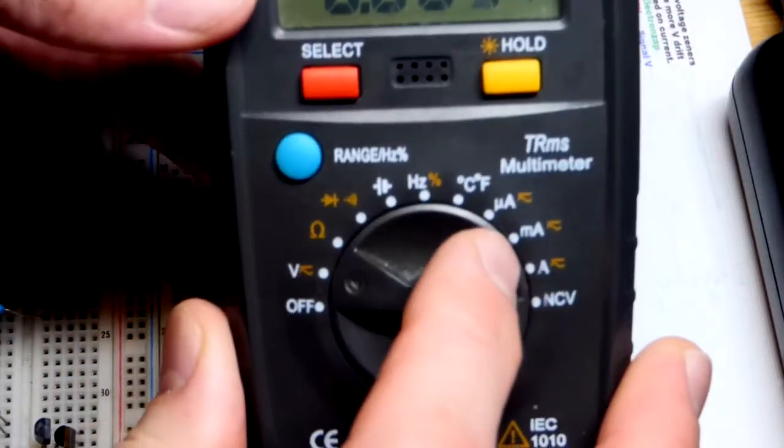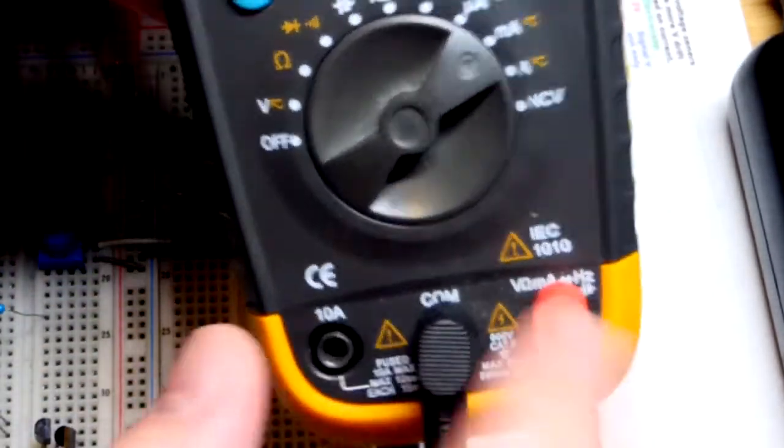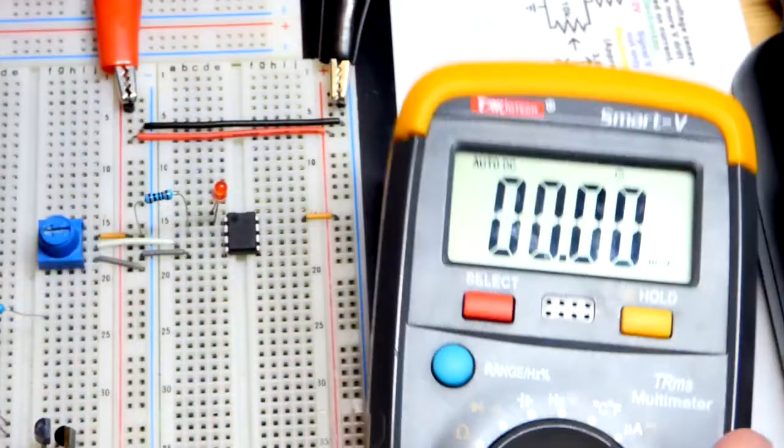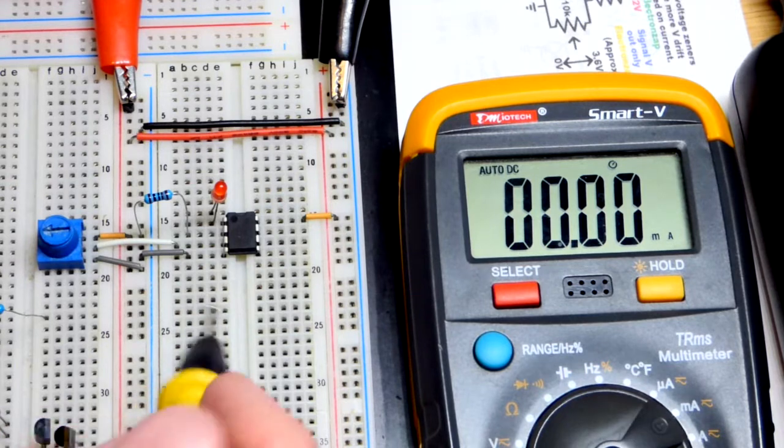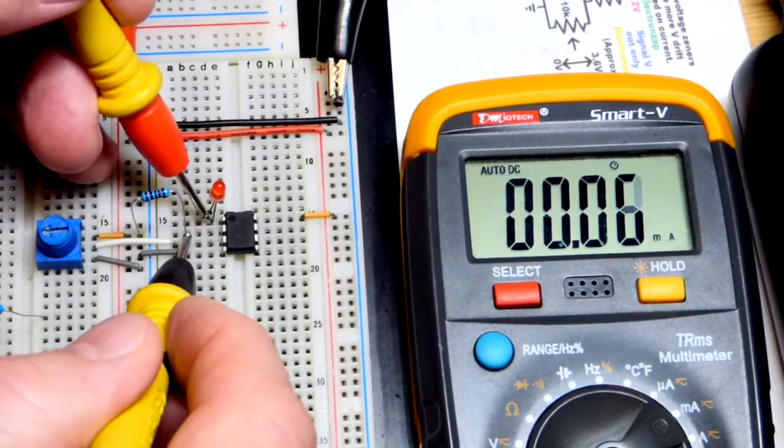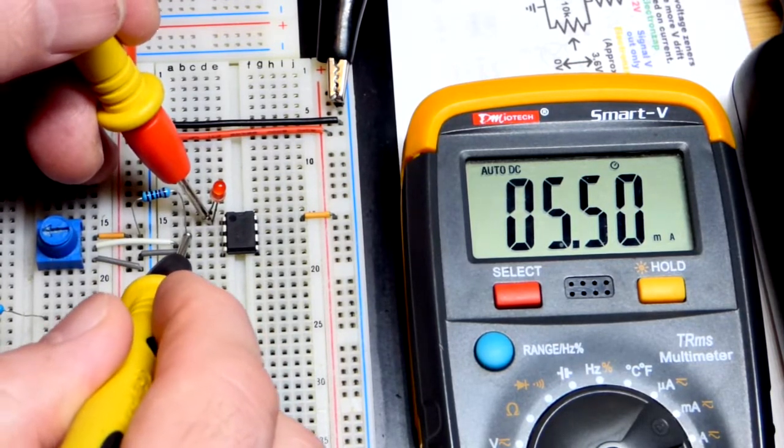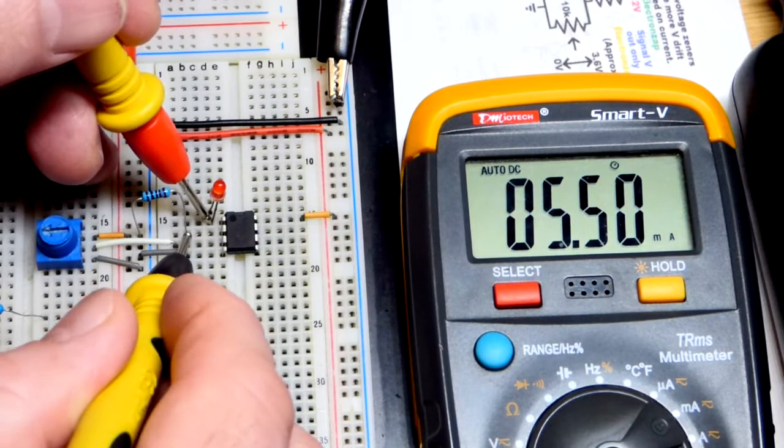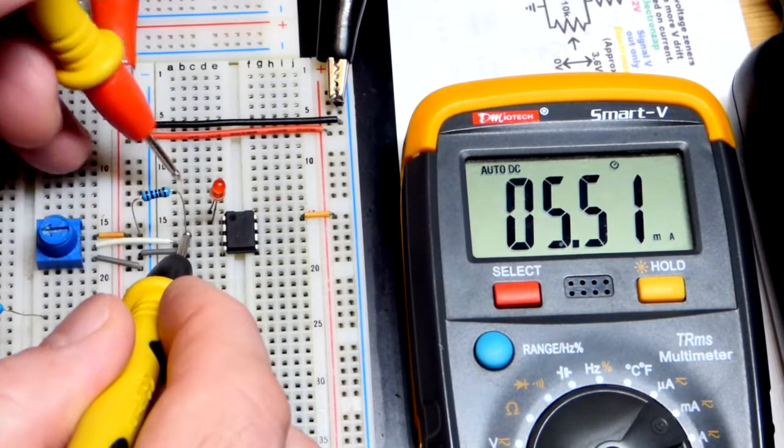Now we're going to set the meter to measure current. I just have a milliamp setting there. Red probe stays in that spot, and you can measure up to 600 milliamps with this meter. There you can see we've got about 5.5 milliamps at the output, going from the output to the inverting input and then through the resistor.